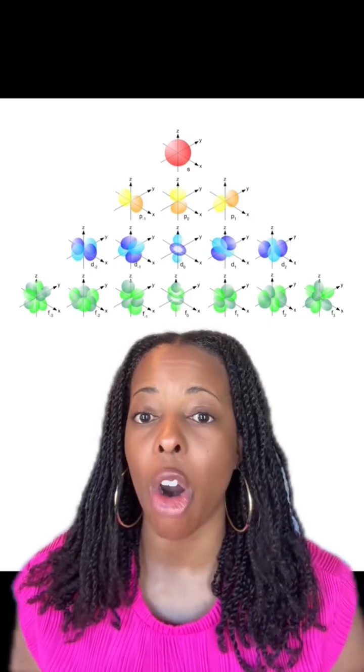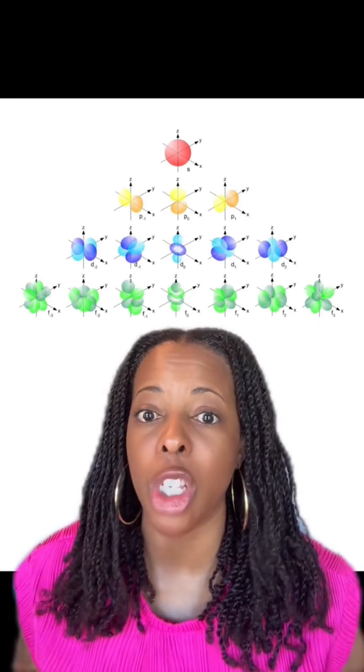And that last row are our f orbitals, and you can see there are seven different types. This is super helpful when we're doing electron configurations or orbital diagrams because this is where we're going to be showing our electrons for each of our different atoms.